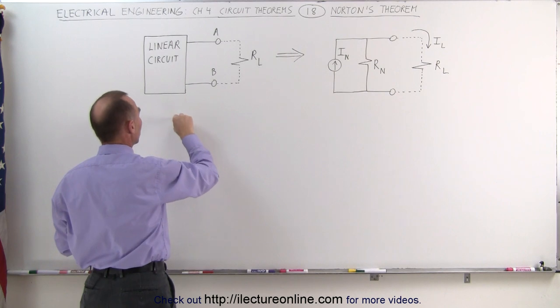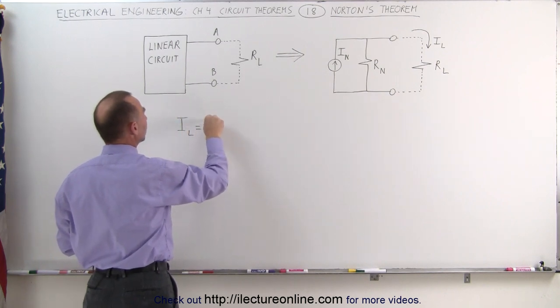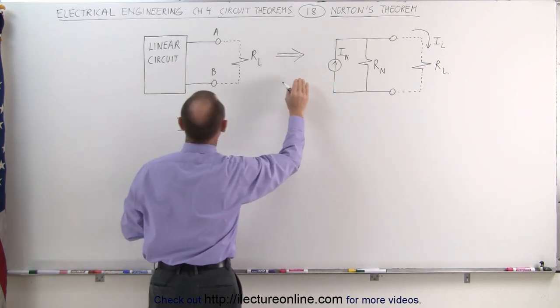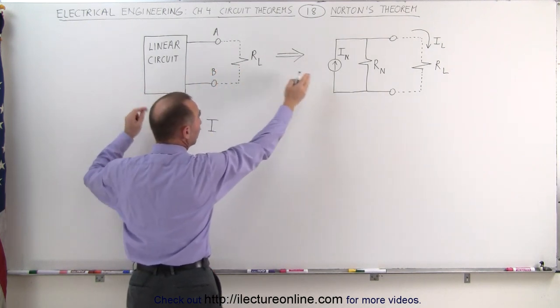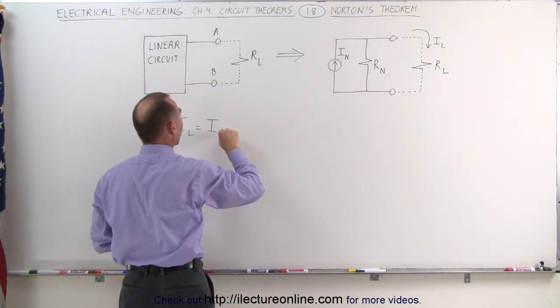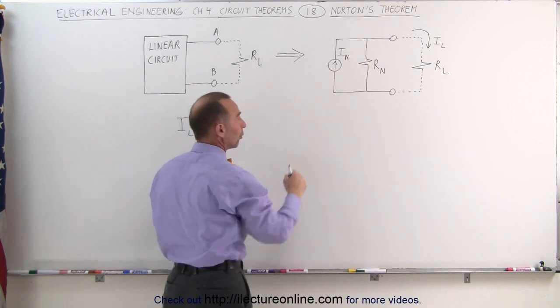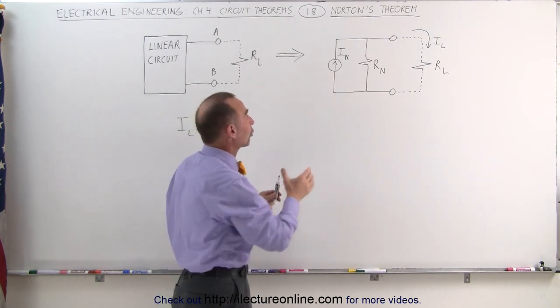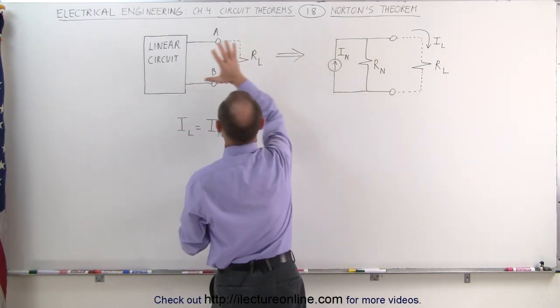If we want to calculate that, we can say that the current through the load resistor is equal to the current provided by the linear circuit. So that would be Norton's current, as we call it. I sub n stands for Norton's current, which represents the singular current source representative of this circuit.